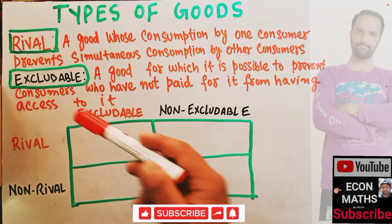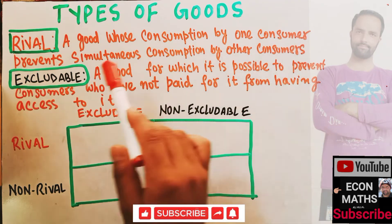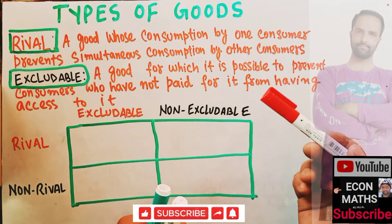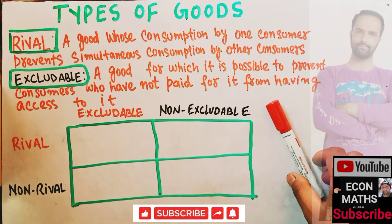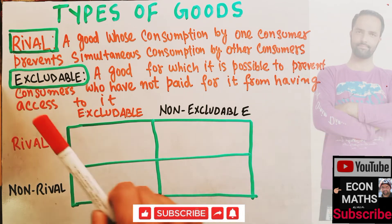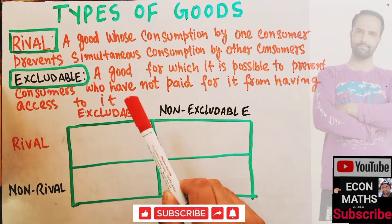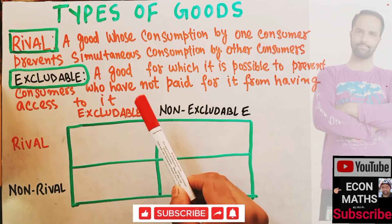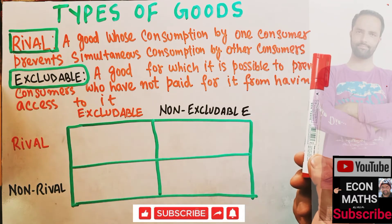By rival, we mean a good whose consumption by one consumer prevents simultaneous consumption by another person — if one person is consuming a good, that good is not available for other people simultaneously. Excludability means a good for which it is possible to prevent consumers who have not paid for it from having access to it — only those persons who pay for it can access it.